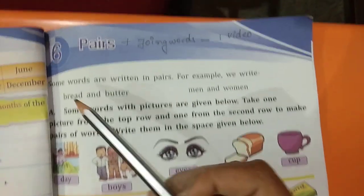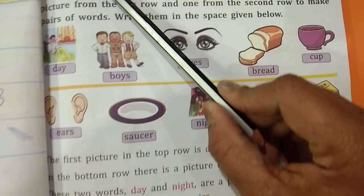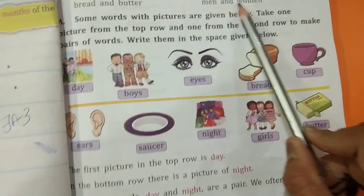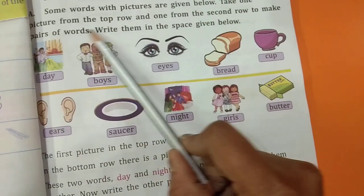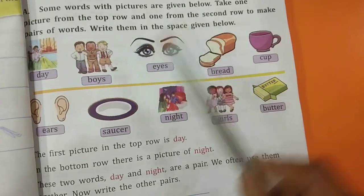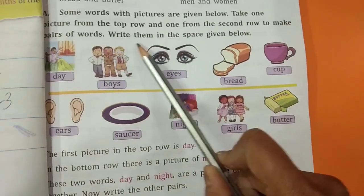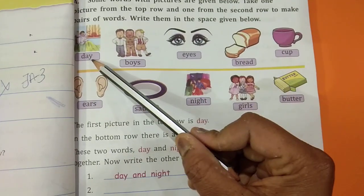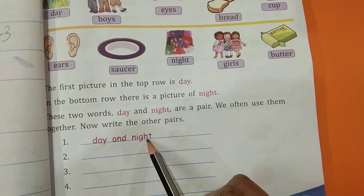Okay children, this is the lesson. Lesson number 6, pairs. Page number 61. Some words are written in pairs. For example, bread and butter, men and women. Some words with pictures are given below. Take one picture from the top row and one from the second row to make pairs of words. Write them in the space given below. See children, day, night. Already given, day and night.